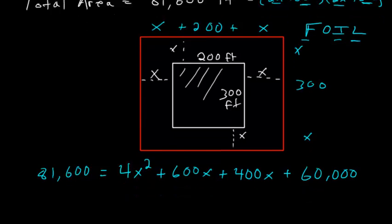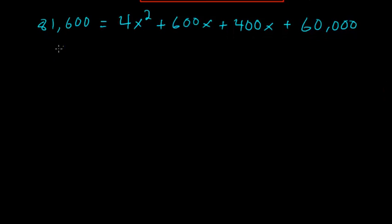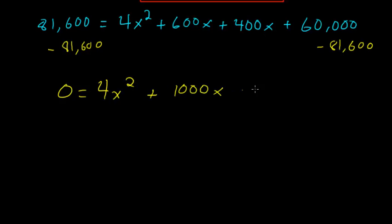And from here, we just have to simplify. So I'll subtract this 81,600 from each side, and I'll also combine this 600x and 400x, so that I have 0 is equal to 4x squared plus 1,000x minus 21,600. And notice everything here can be divided by 4, so that we can simplify. So 0 is x squared plus 250x minus 5,400.